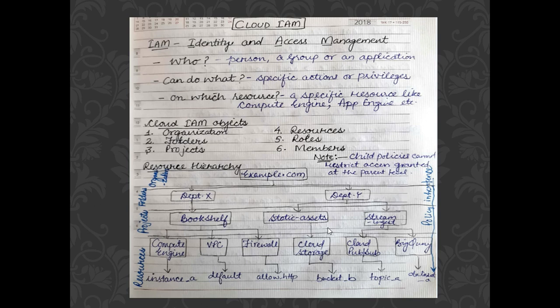That is the full meaning of Identity and Access Management. Before understanding Cloud IAM in brief, I have presented six objects which are essential to know within the IAM model: organization, folders, projects, resources, roles, and members. Before understanding these objects, let's discuss the cloud hierarchy first.